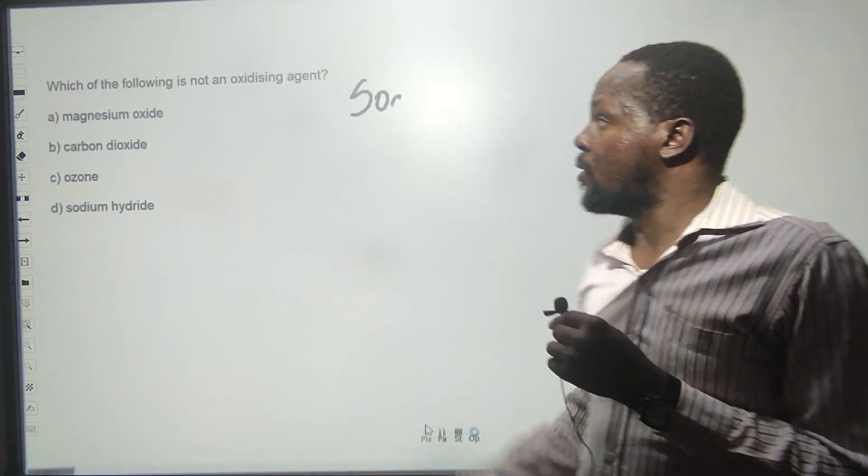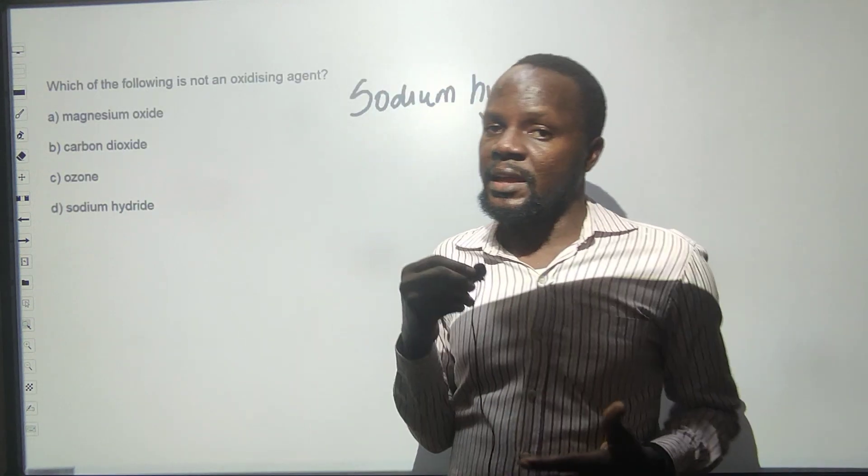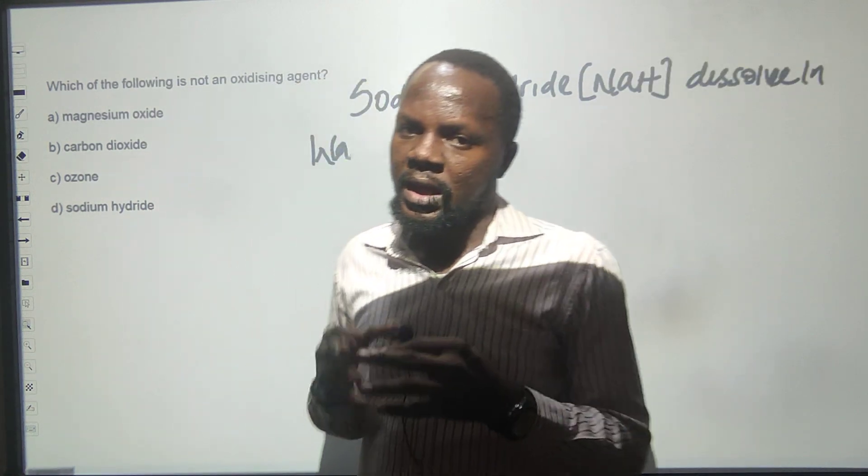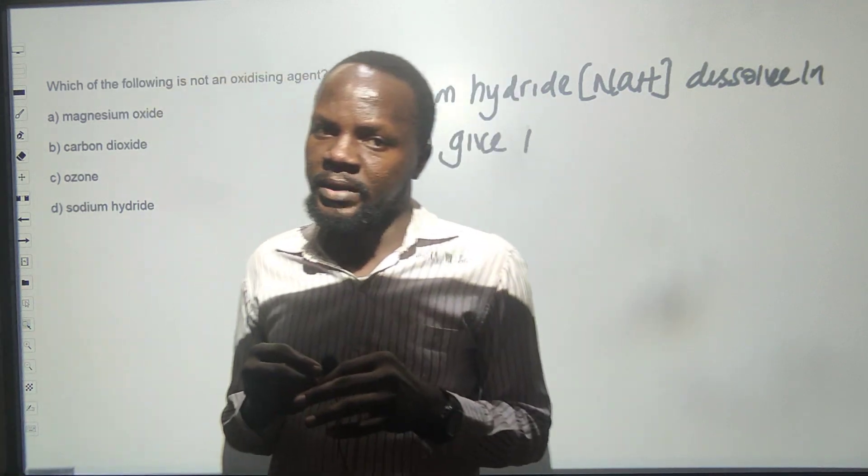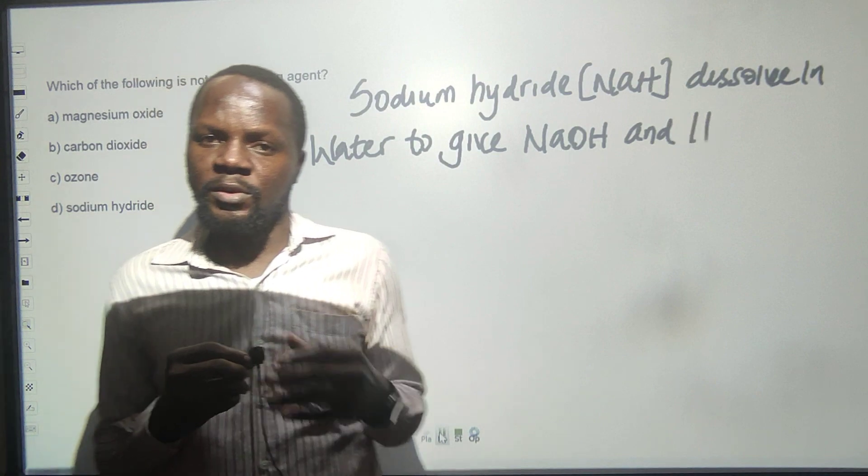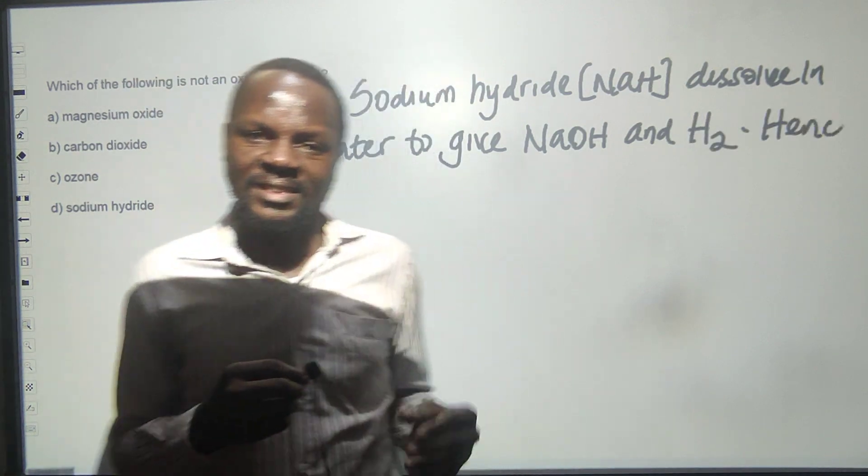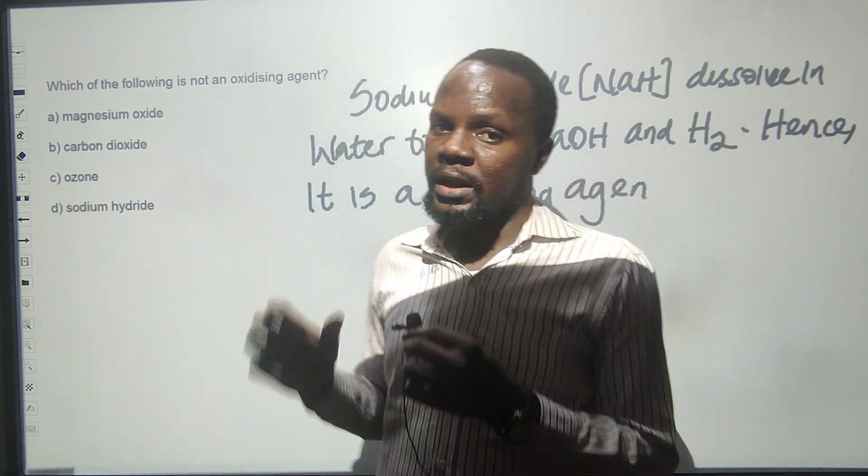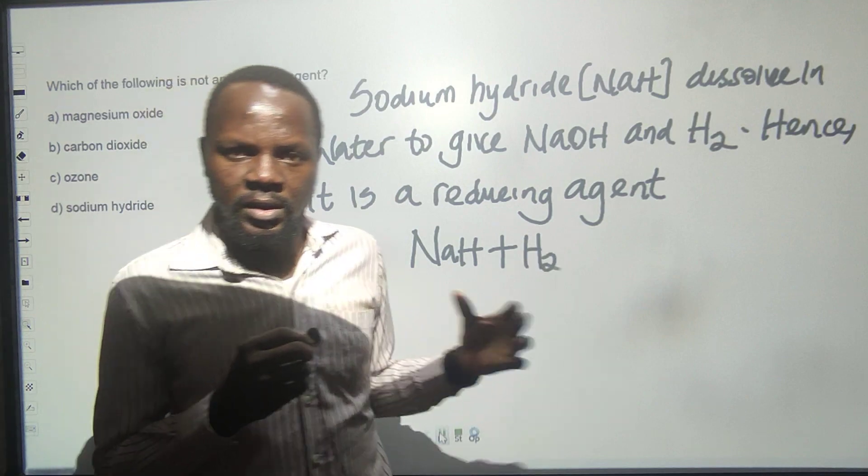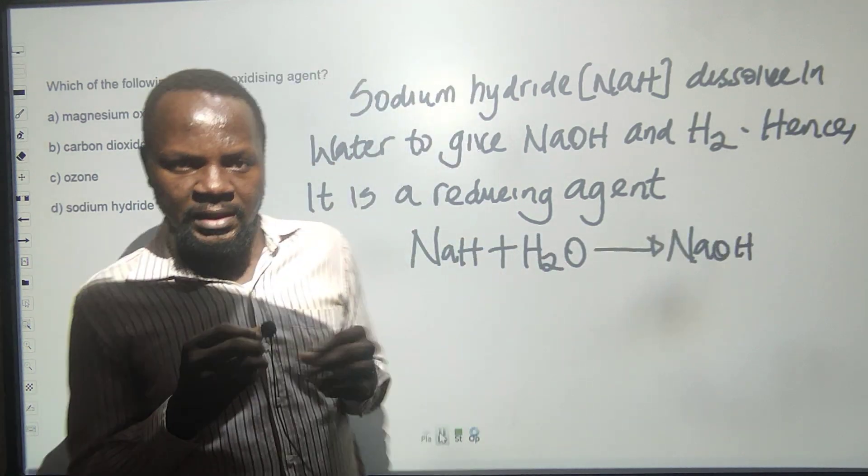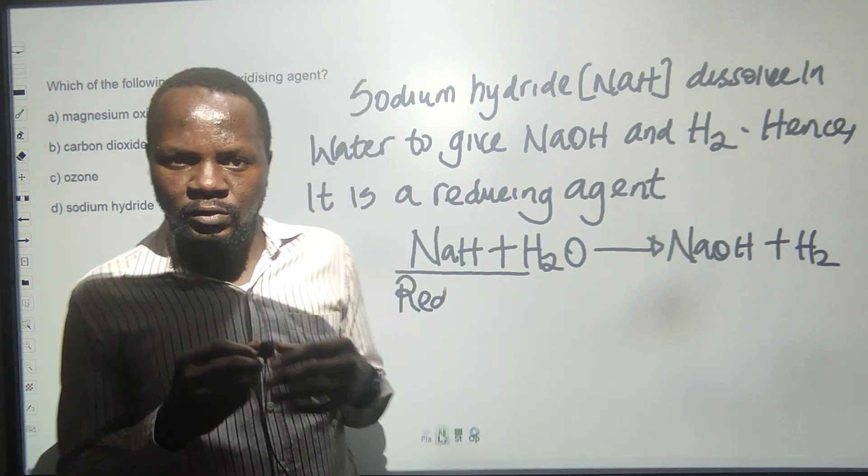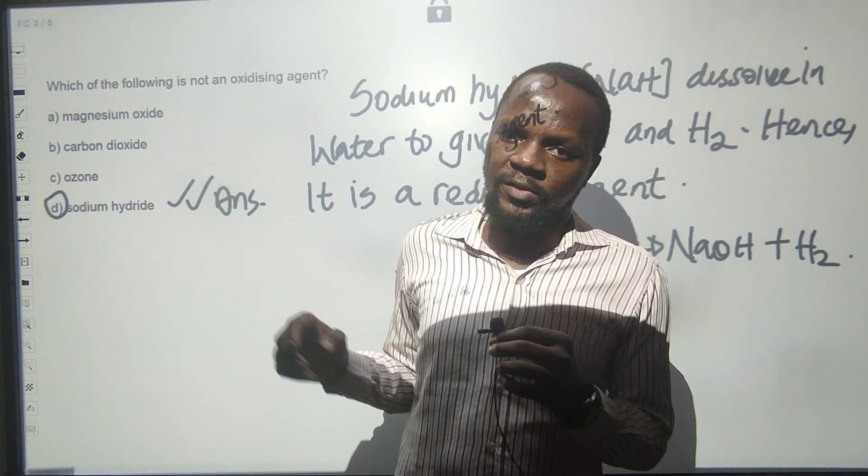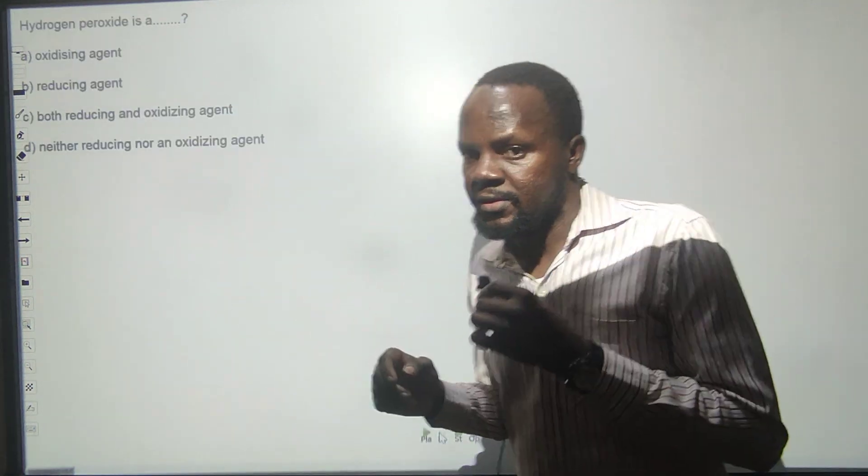The correct answer is sodium hydride. Looking at it, sodium hydride (NaH) can easily dissolve in water. When you dissolve it in water, you get NaOH plus H2. You can see that NaH has been oxidized to NaOH, and hence the agent that acts that way is called a reducing agent. NaH acts as a reducing agent. Every other option here are oxidizing agents.